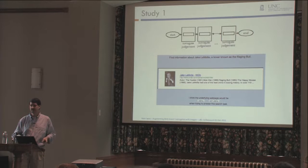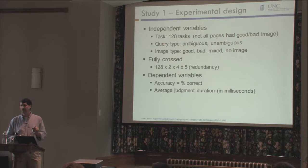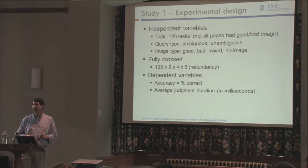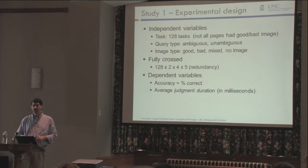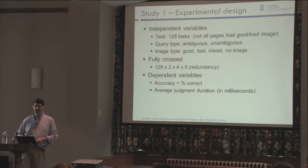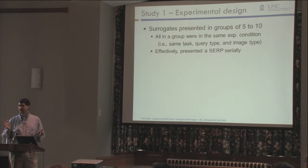Our variables were task, ambiguous versus unambiguous query, and image type — good, bad, mixed, or no image — fully crossed. We did a redundancy of five, so five people did each condition. The dependent measures were accuracy — the percentage of judgments that agreed with the ground truth — and average judgment duration, meaning how long it took to make a judgment. These were presented in groups of about five to ten corresponding to the SERP we had gathered.